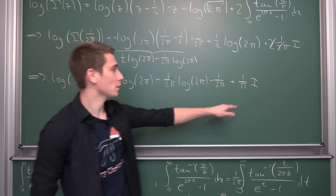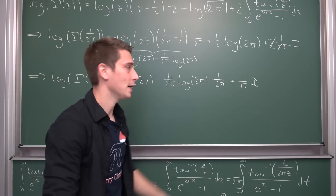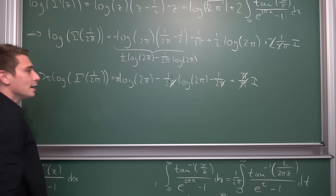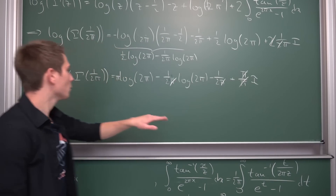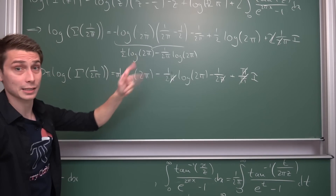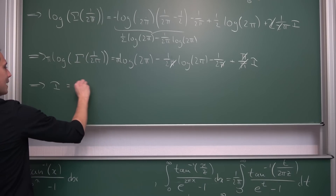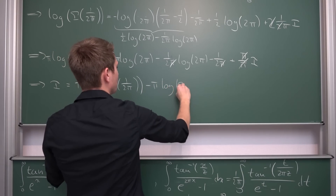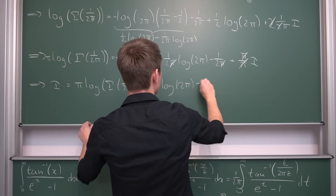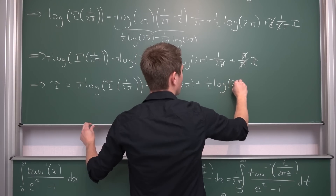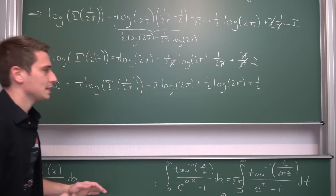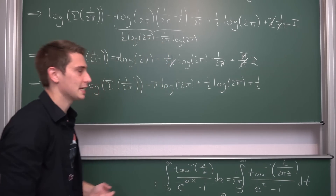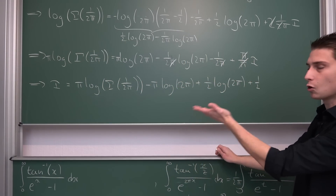Now we are basically done. We are going to solve for I: first multiply both sides by π, since π is not equal to 0. Next subtract π times log of 2π from both sides, and then we get the value for our integral I. Our terrible integral I is hence nothing but π times the log of gamma of 1 over 2π, minus π times the log of 2π, plus positive 1 half times log of 2π, plus 1 half. You can bring some terms together by factoring out log of 2π if you wish, but I'll leave it as is — this is already the answer.